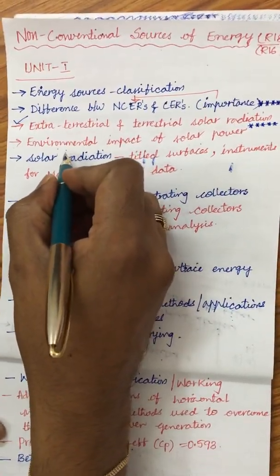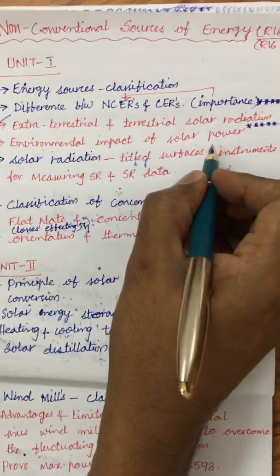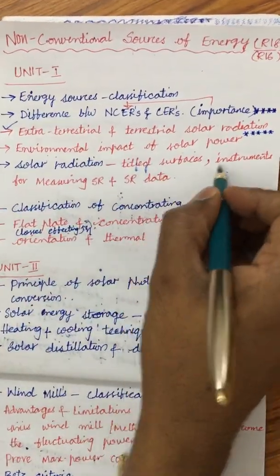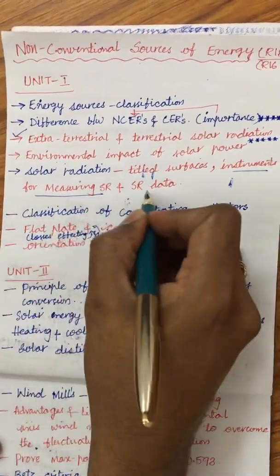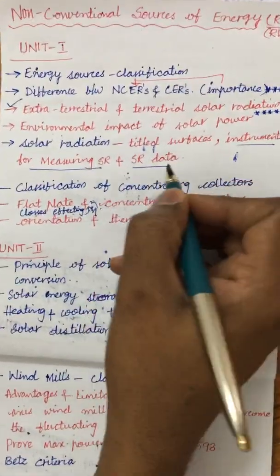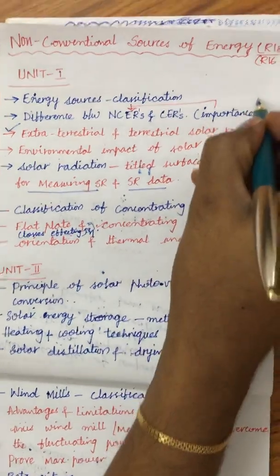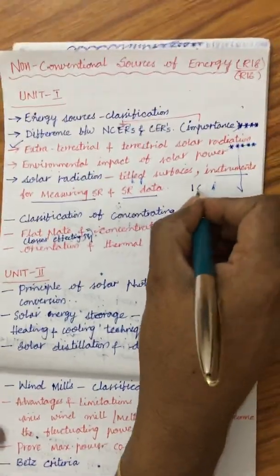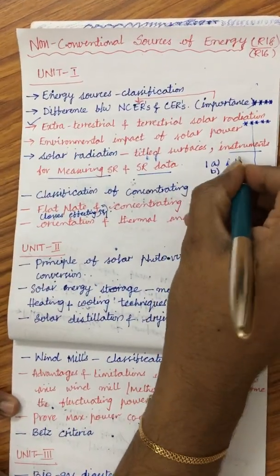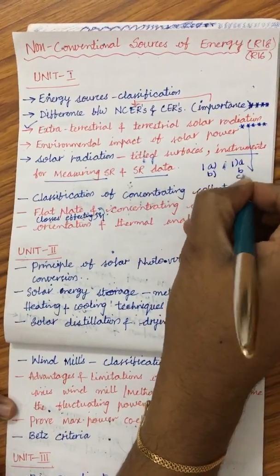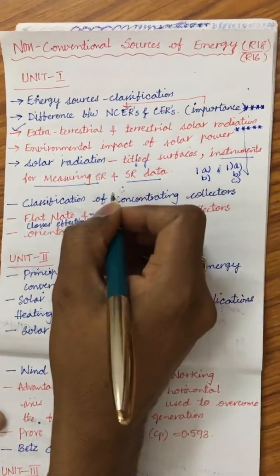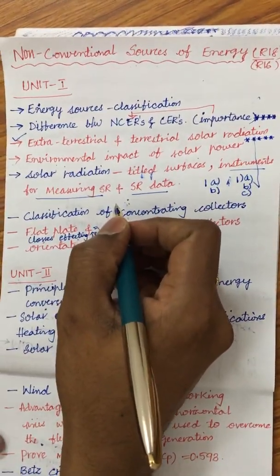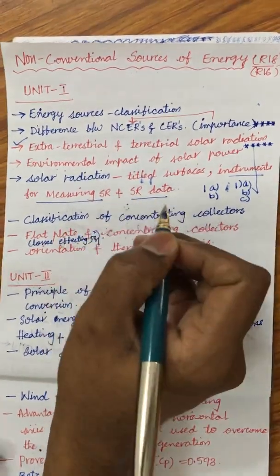Also covered in Unit 1 are the environmental impact of solar power, solar radiation on tilted surfaces, instruments for measuring solar radiation, and solar radiation data. From these topics you can expect one question — either 1A or 1B, or sometimes a 1A/B/C split — because the first unit covers a lot of data related to energy resources, and general questions from Unit 1 are also possible.